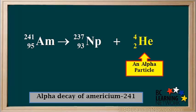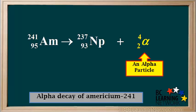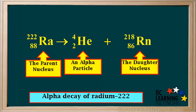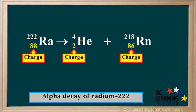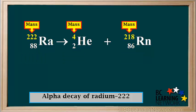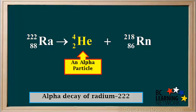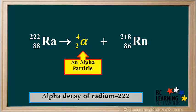Remember, He with a 4 and a 2 is only one way of depicting an alpha particle. We could also use the Greek letter alpha with a 4 and a 2 on the left, or simply an alpha symbol. Here's another example: the equation for the alpha decay of the isotope radium-222. Notice in this example, the alpha particle is written before the daughter nucleus on the right. It doesn't matter what order these are in, as long as they're both on the right side. Charge is conserved: the total charge on the left side is 88, and the total charge on the right side is 2 plus 86, which is also equal to 88. Mass is also conserved: the total mass on the left is 222, and the total mass on the right is 4 plus 218, which is also equal to 222.